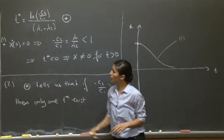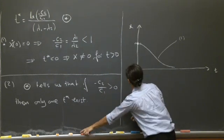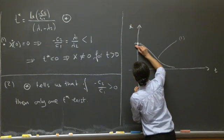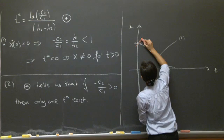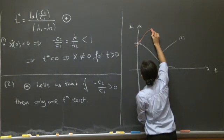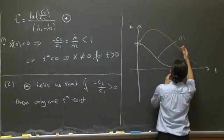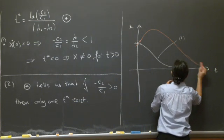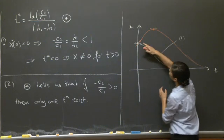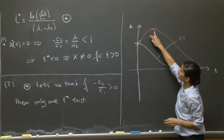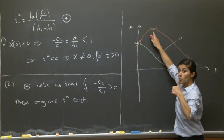Now let's look at other initial conditions. Starting from the same stretched position but with a much larger positive velocity, the system goes up, but eventually it has to come back down toward 0. We can show that the derivative x-dot can reach 0 only once — corresponding to a single maximum.